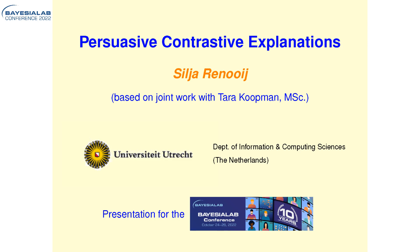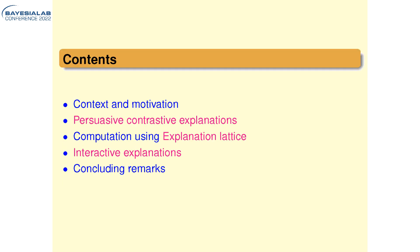So it's not about one particular application, but about providing explanations for Bayesian networks, assuming we have discrete variables. I'll start with a bit of context and motivation, explain what we mean by persuasive contrastive explanations, briefly cover how we compute those from what we've coined an explanation lattice, and give an idea of the interactive explanations we propose to use with the user.